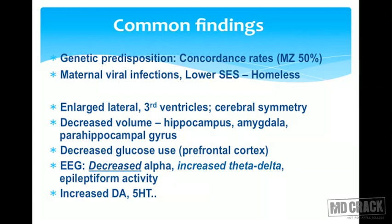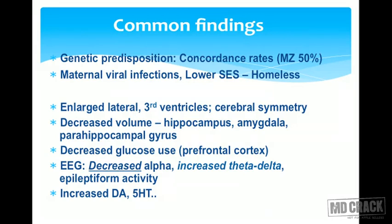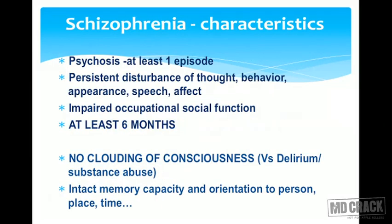Common findings in schizophrenia include genetic predisposition with a 50% concordance rate in monozygotic twins, association with maternal viral infection, and lower socioeconomic status. Anatomically, there are enlarged lateral and third ventricles, decreased volume of the hippocampus, amygdala, and parahippocampal gyrus, and decreased glucose use in the prefrontal cortex. EEG shows decreased alpha and increased theta and delta waves with epileptiform activity. Biochemically, there are increased levels of dopamine and 5-hydroxytryptamine.